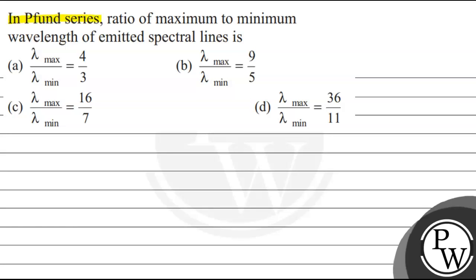Let's read the question. Key point series: ratio of maximum to minimum wavelength of the Pfund spectral lines. Option A: λmax/λmin = 4/3. Option B: λmax/λmin = 9/5. Option C: λmax/λmin = 16/7. Option D: λmax/λmin = 36/11.